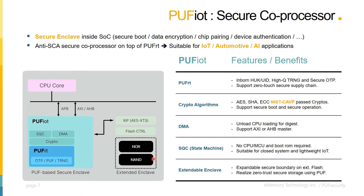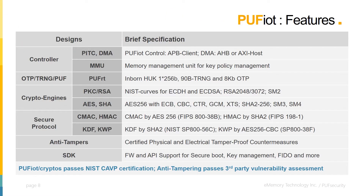The next slide goes into more detail about the features of PUF-IoT. We break down PUF-IoT into six parts. One, PUF-IoT contains three modules to allow it to interface with the rest of the system: the PITC, using the APB protocol to accept commands and send out system status; the DMA, using the AHB or AXI protocol to directly interface with system memory; and the MMU, paired with the DMA for control of system memory.